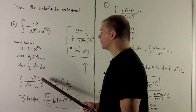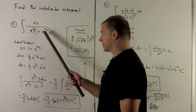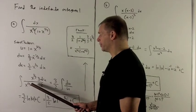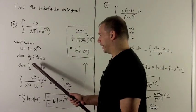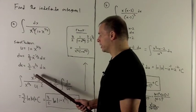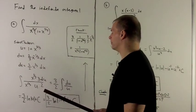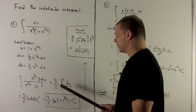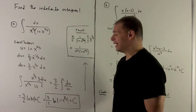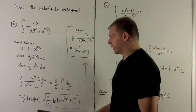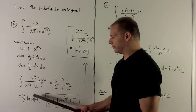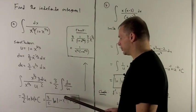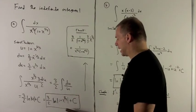We substitute in. My 1 plus x to the 2/3 becomes u. The x to the 1/3 on the bottom stays where it is, and dx becomes 3 times x to the 1/3 divided by 2 times du. The x to the 1/3 terms cancel out, leaving me with 3/2 du over u. The antiderivative of du over u is just natural log of absolute value of u. I put 1 plus x to the 2/3 back in, and then I have my answer.